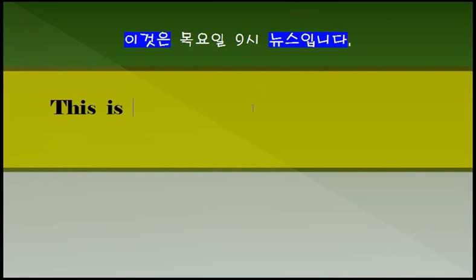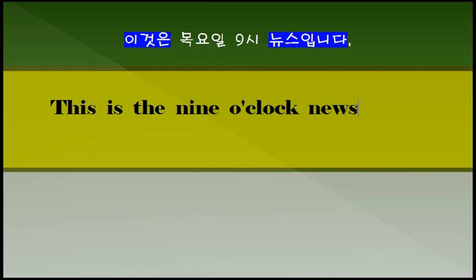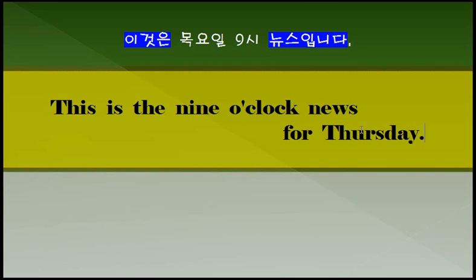This is 9시 뉴스. The 9 o'clock news. 목요일 9시 뉴스. 목요일을 위한 9시 뉴스입니다. 그래서 for라고 하는 전치사 쓰는 것이 좋습니다. 목요일은 Thursday. 목요일 철저히 조심하시기 바랍니다. This is the 9 o'clock news for Thursday.